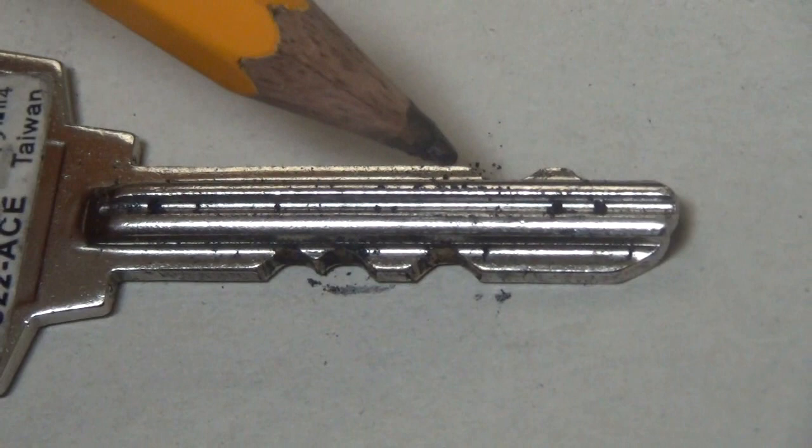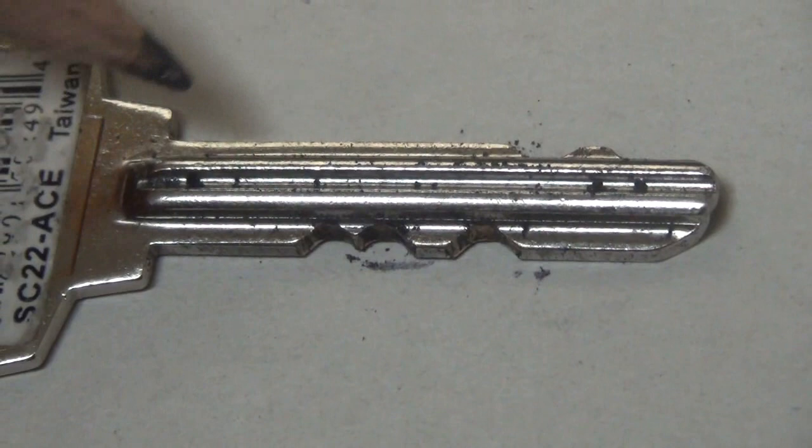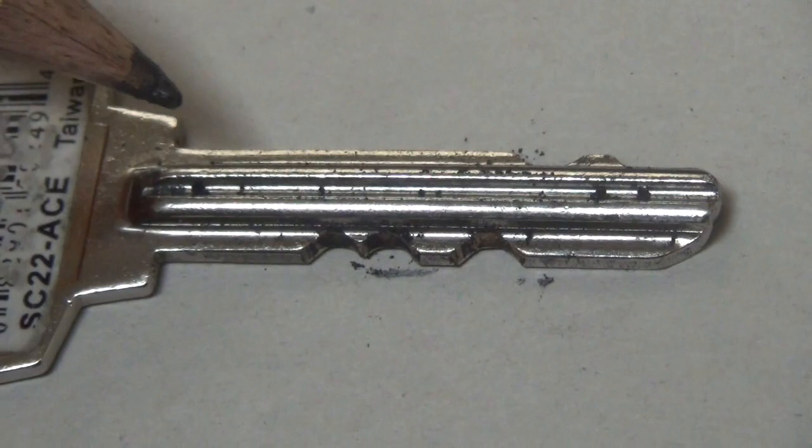Okay, so there we go. See that graphite powder sitting on the surface of the key? Well, that should do it. But if it doesn't, we may have to do it one more time. So let's go over to the lock and insert the key and see what happens.